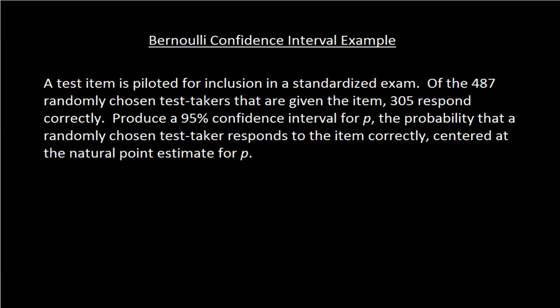In this video we're going to construct a confidence interval for a Bernoulli random variable. Recall that a Bernoulli random variable is a discrete random variable that only has two possible values, traditionally encoded as 0 and 1. The parameter of the random variable is little p, and p is the probability that the random variable equals 1.